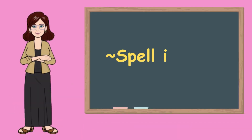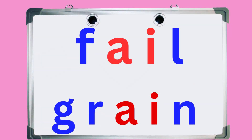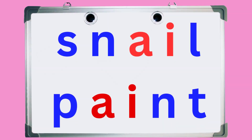Get ready and spell it out with me. Plain: P-L-A-I-N, plain. Braid: B-R-A-I-D, braid. Fail: F-A-I-L, fail. Grain: G-R-A-I-N, grain. Snail: S-N-A-I-L, snail. Paint: P-A-I-N-T, paint.